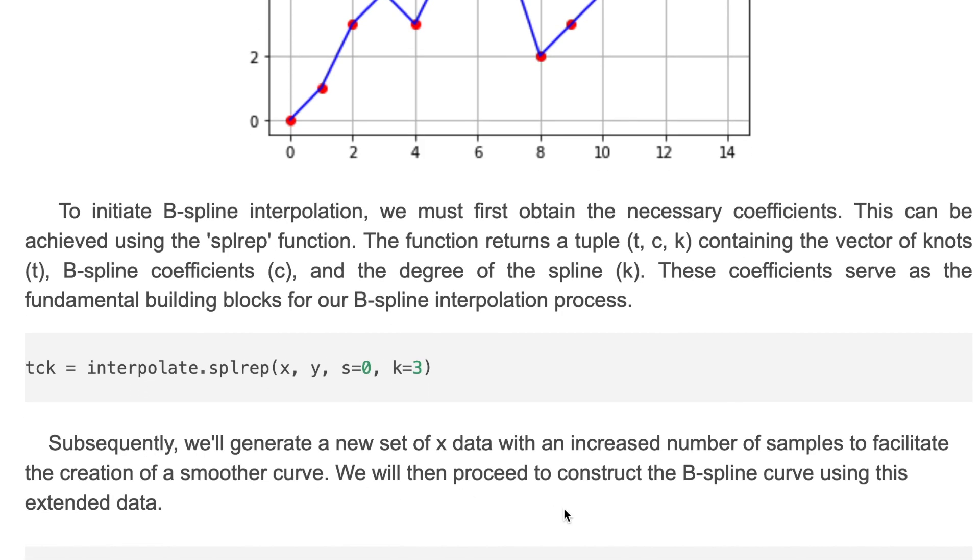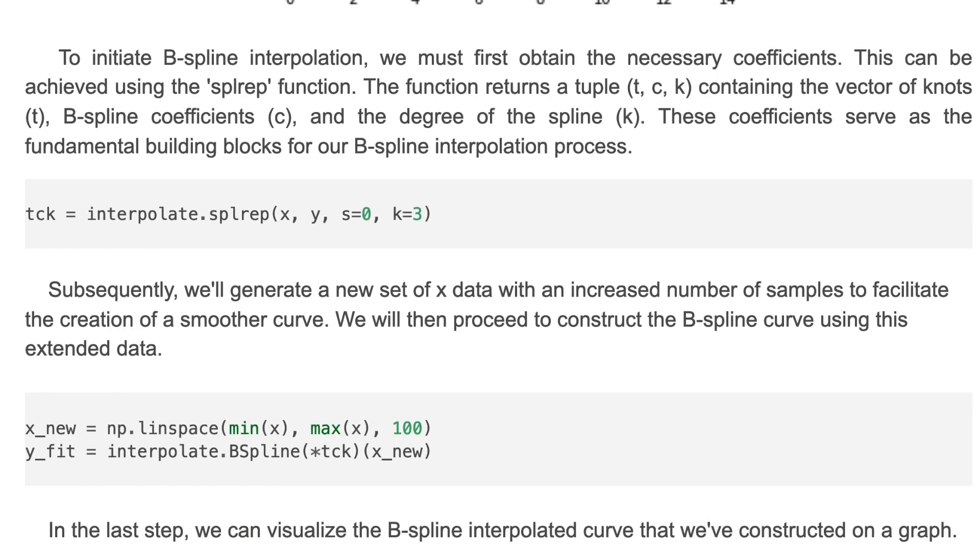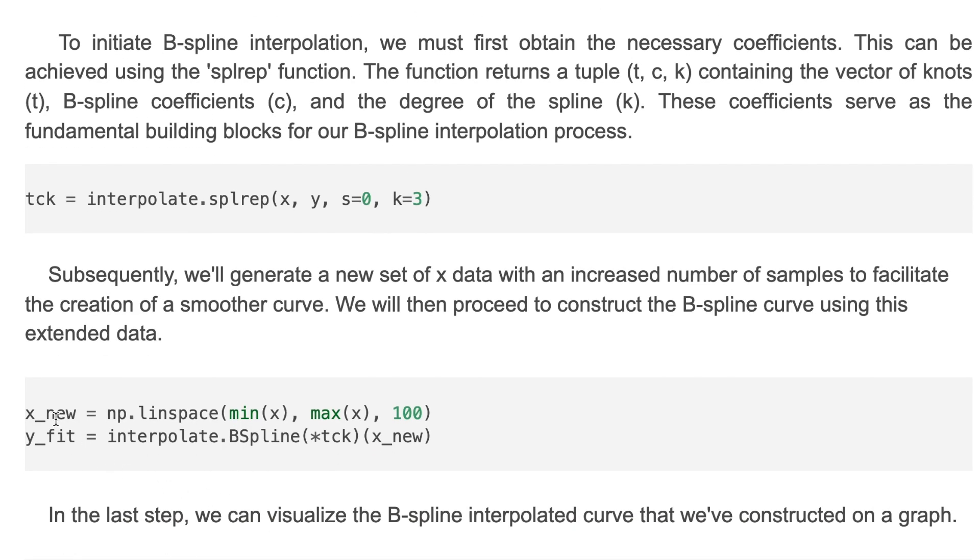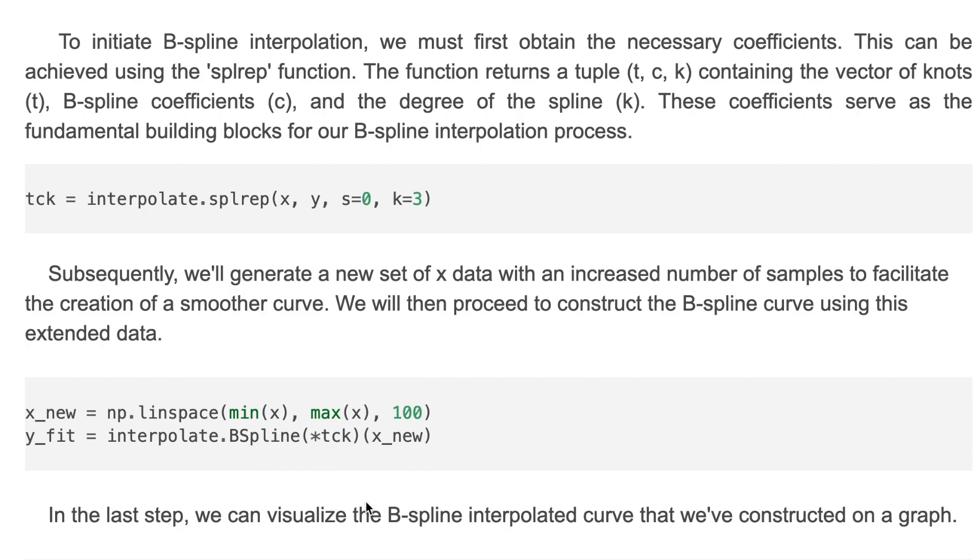Next, we'll generate a new set of x data with an increased number of samples to facilitate the creation of the smoother curve. We will then proceed to construct the B-spline curve using this extended data. Here we generated new x data and we applied B-spline class here with a tuple data and x values.